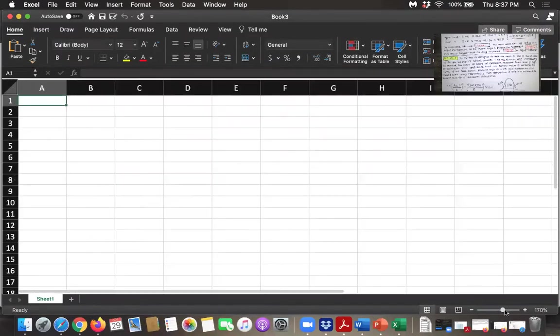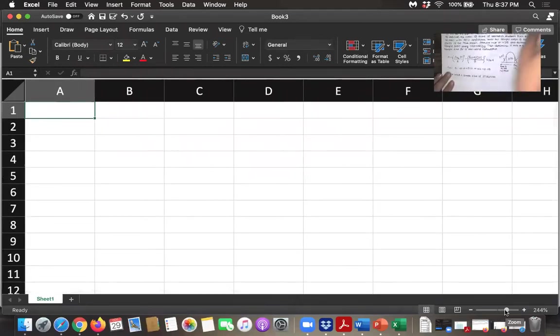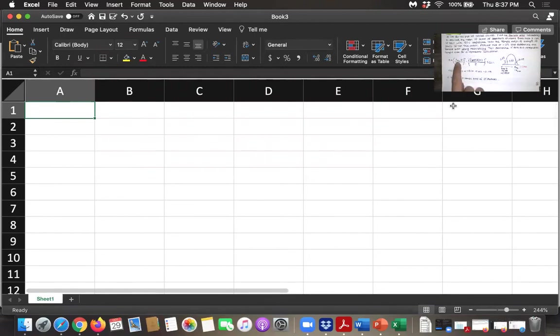We still need to use that same formula. So we still need this Z sub alpha over two. That is the Z score corresponding to an area to the left of 95% of the area or 0.95.